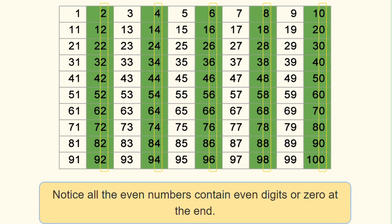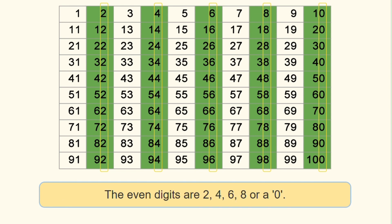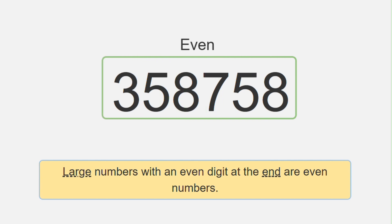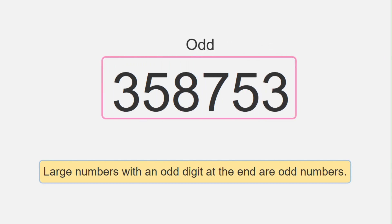And these are the even numbers. Notice all the even numbers contain even digits or zero at the end. The even digits are two, four, six, eight, or zero. Large numbers with an even digit at the end are even numbers; large numbers with an odd digit at the end are odd numbers.